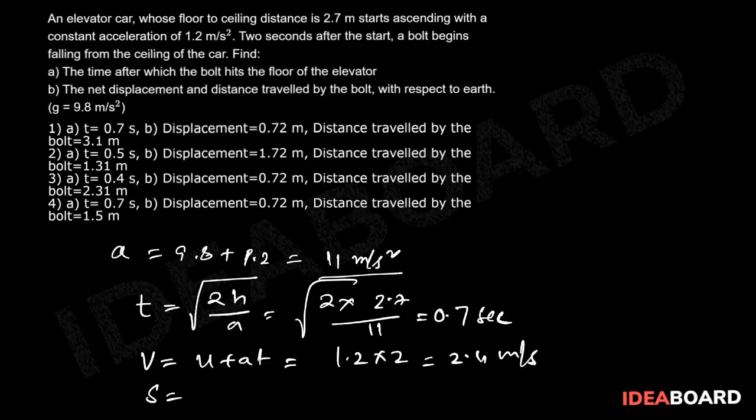Therefore displacement s = ut - ½gt², that is 2.4 × 0.7 - ½ × 9.8 × 0.7²,